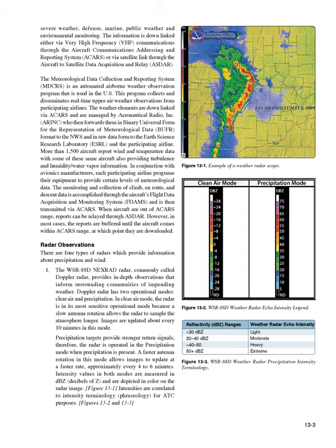Hazardous In-Flight Weather Advisory Service (HIWAS), available in the 48 conterminous states, is an automated continuous broadcast of hazardous weather information over selected VOR navigational aids (NAVAIDs). The broadcasts include advisories such as AIRMETs, SIGMETs, convective SIGMETs, and urgent PIREPs. The broadcasts are automatically updated as changes occur. Pilots should contact an FSS for additional information. VORs that have HIWAS capability are depicted on aeronautical charts with an H in the upper right corner of the identification box.